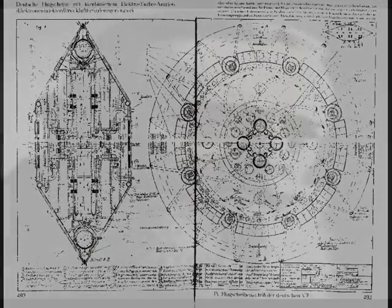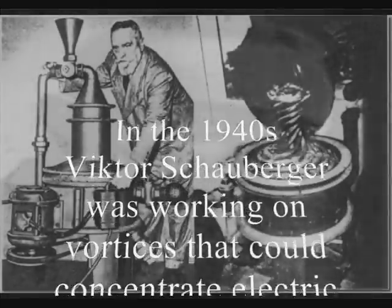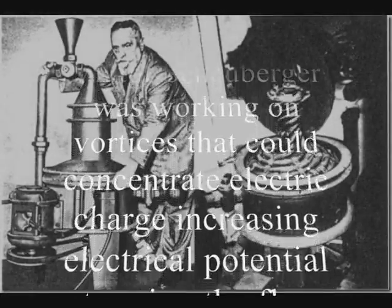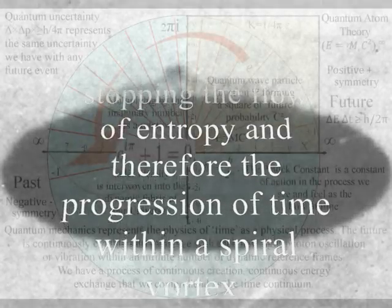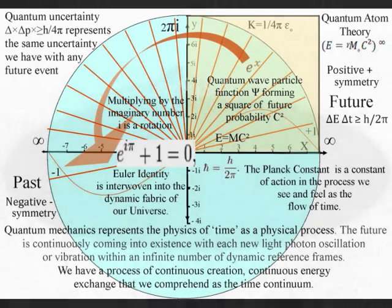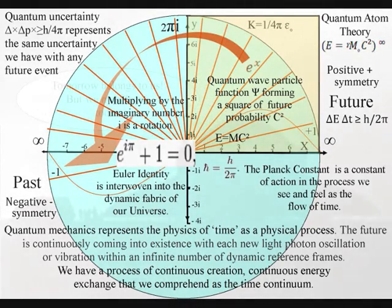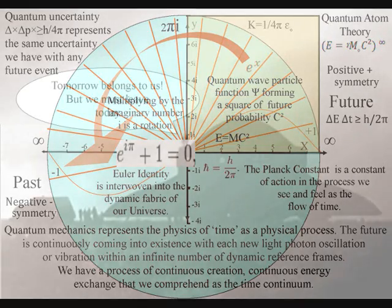There are videos on YouTube that suggest that the Germans were developing time machines in the 1940s. I find this very hard to believe because the technology would be beyond them, but if time machines were developed in the 1940s, it could explain the UFOs we have seen in our skies since then.